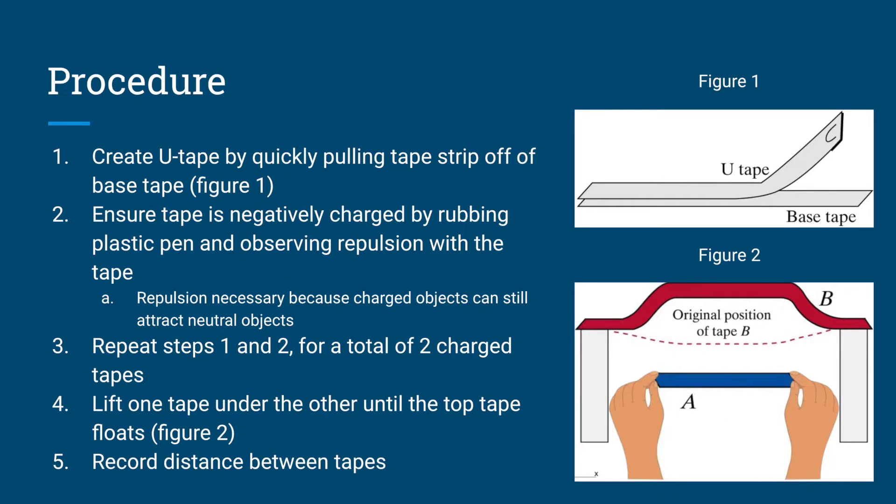To replicate this experiment, create a U-tape by quickly pulling a tape strip off of a base tape, shown in figure 1. Ensure the tape is negatively charged by rubbing a plastic pen and observing repulsion with the tape.